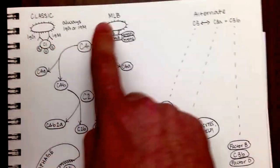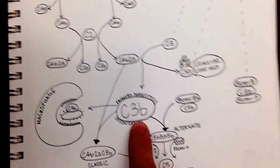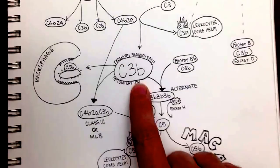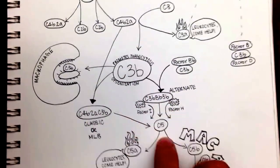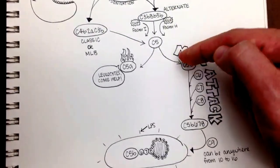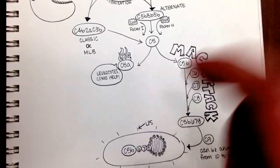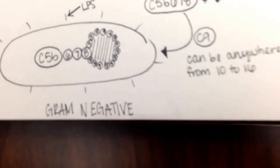We have our classic, MLB and alternate, that all work together in different ways to get us to the C3b, which is an opsonizer. And if that's not good enough, then through various combinations, we cleave C5 and initiate the MAC attack complex, which goes C5b and then 678 and 999999, and that initiates the MAC attack and ends up killing the bacteria.